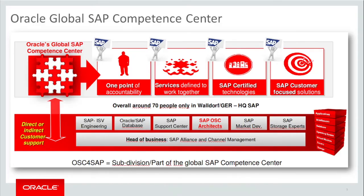The Global Oracle SAP CC is located in Waldorf, Germany, nearby the HQ of SAP. There we have several offices and an own data center. We have a dedicated team of people — engineers, architects, marketing, partner relationship management, and many other experts just related to the SAP business.